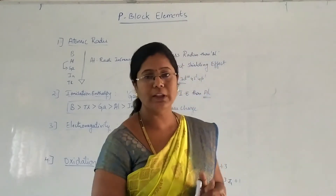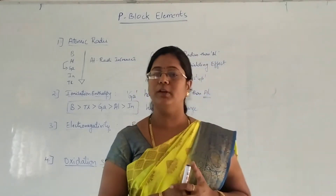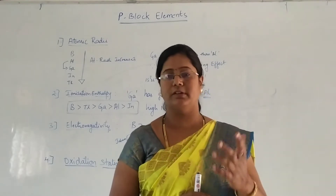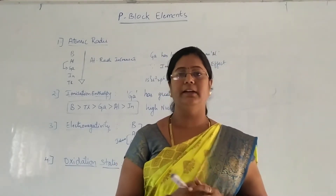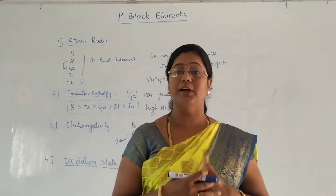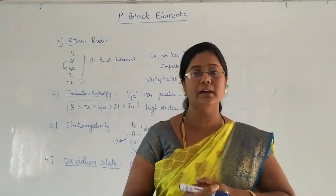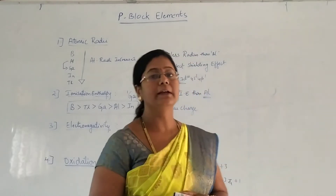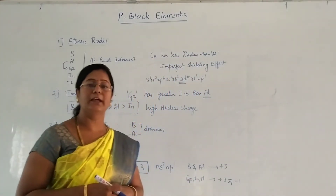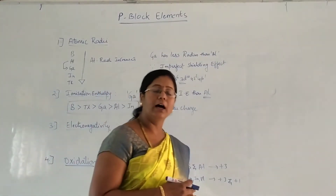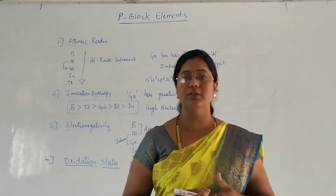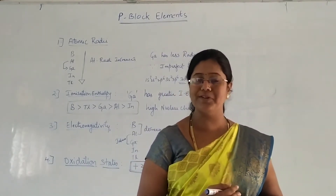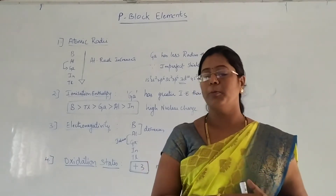There are 6 groups. In the last class we saw the elements present in groups 13, 14, 15, 16, 17, and 18. Now, we start with group 13. Group 13 is called the Boron family. It is called the Boron family because Boron is the first member.